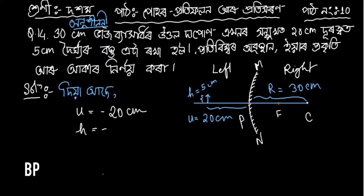This is 5 centimetres. This is called positive, so this is 5 centimetres. This is 2 centimetres. We can see that the left side is negative and the right side of the left is also negative.